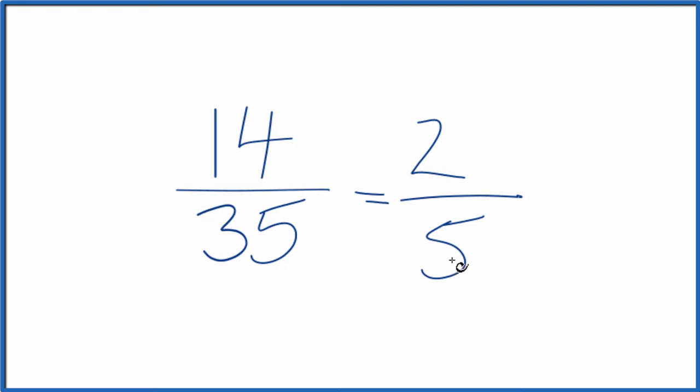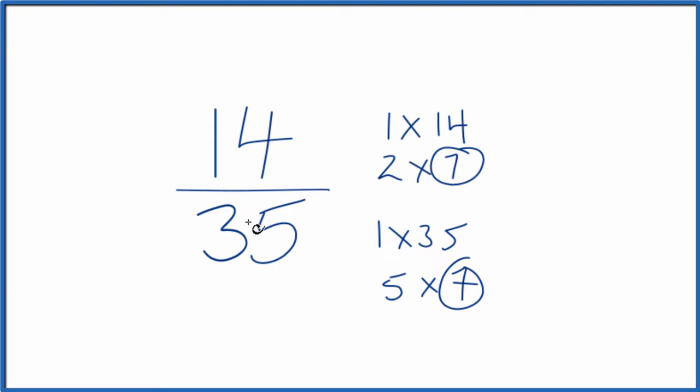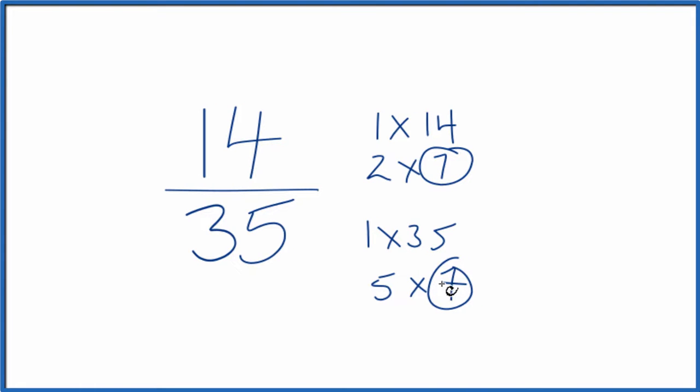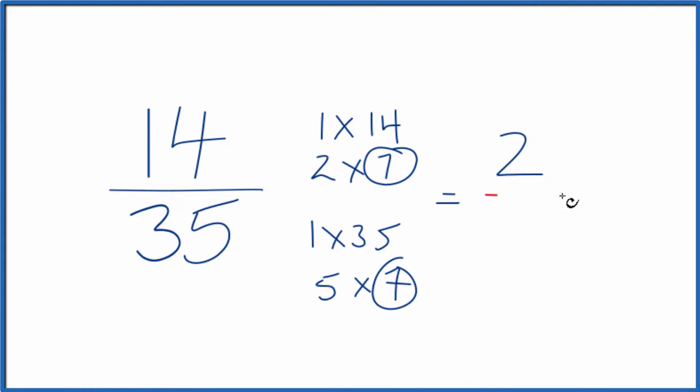If you didn't know that, you could write the factors out for 14 and 35. They look like this. We have 14 and then 35. And you'll recognize the greatest common factor between 14 and 35 is 7. So we divide 14 by 7, we divide 35 by 7, and we get 2 5ths.